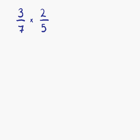In this lesson, we're going to look at multiplying fractions. This is the first example of seven examples. We have 3 sevenths multiplied by 2 fifths. When we are multiplying fractions, do we have to have the same denominator — in other words, the same number on the bottom? Well, the answer is no. That's only required when you're adding and subtracting fractions.